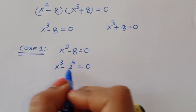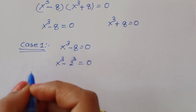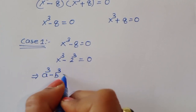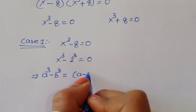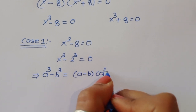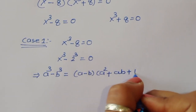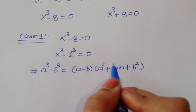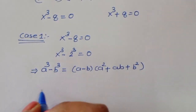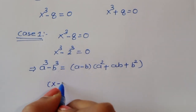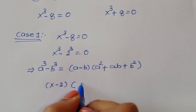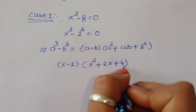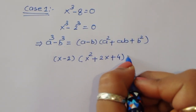This is the cube form formula. A cubed minus b cubed is equal to a minus b times a squared plus ab plus b squared. Using this formula, we can write x minus 2 times x squared plus 2x plus 4 — since 2 squared is 4 — is equal to 0.